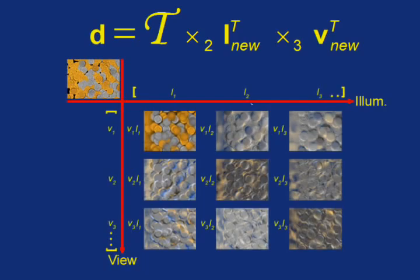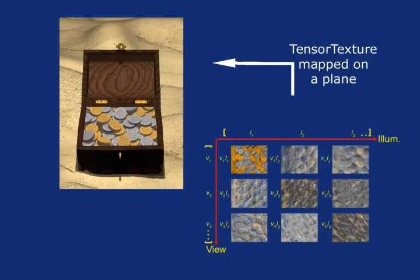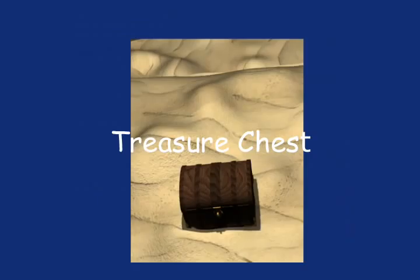In the following animation, the coins are a tensor texture mapped onto a simple planar surface. However, it invokes an impression of 3D relief as we vary the viewpoint and illumination.